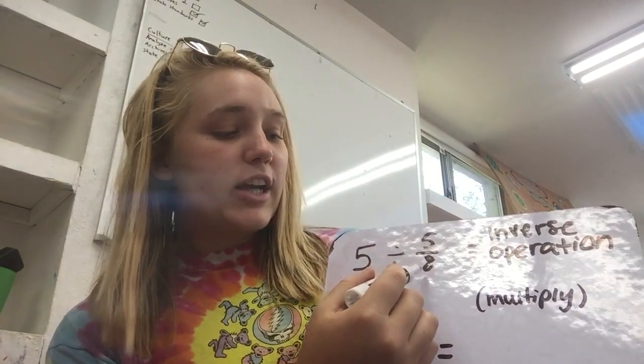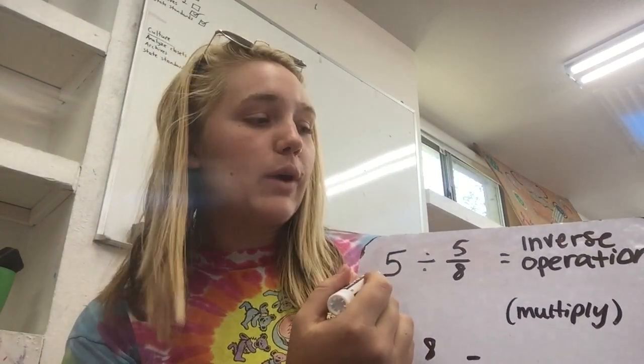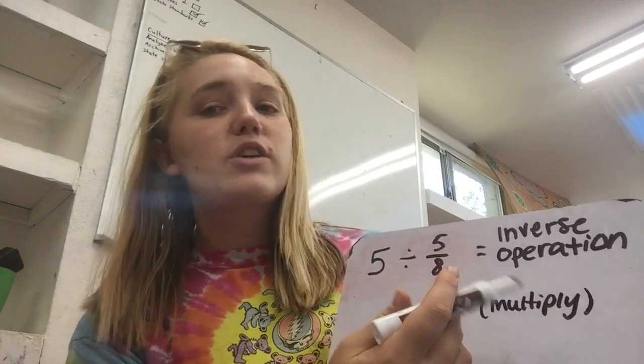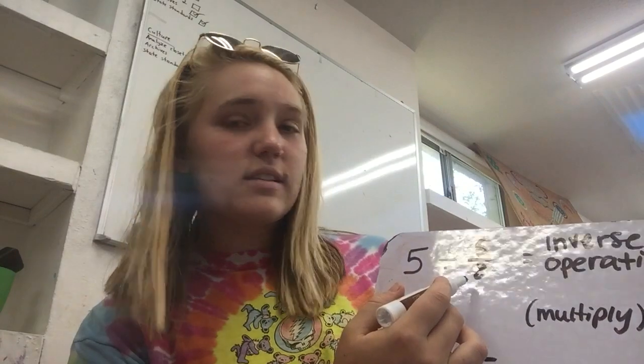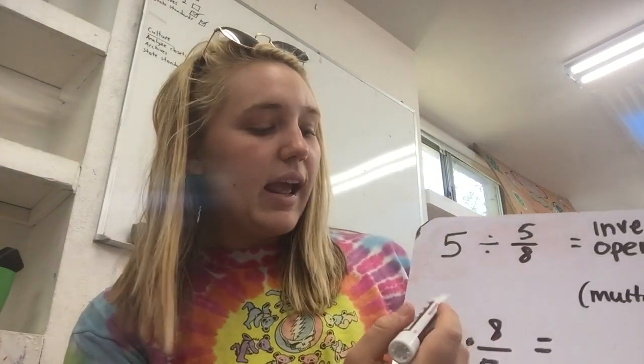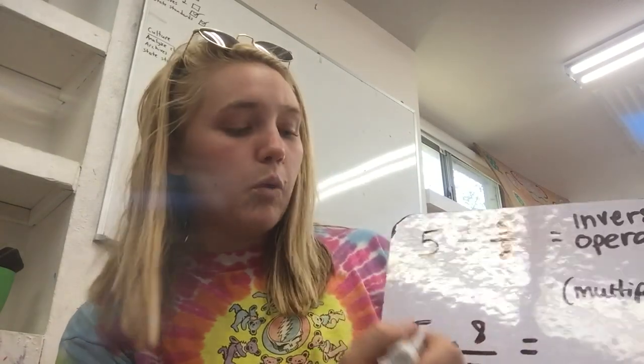When you have a whole number divided by a fraction, what you have to do is something called the inverse operation. The inverse operation is when you take this equation and automatically make it a multiplication problem, and you put the five over one.